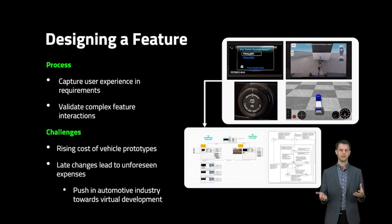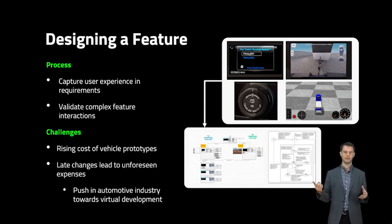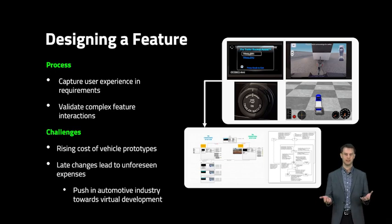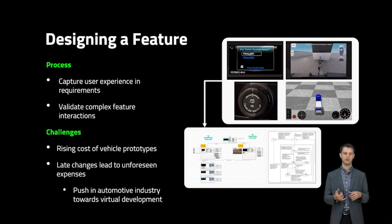An example of this might be for Pro Trailer Backup Assist: the vehicle may be in a state expecting the user to shift to reverse, but there is a conflict in requirements and the HMI requirement is showcasing drive forward. This conflict would create a poor user experience and would need to be corrected. Once software and hardware is created, it can be really costly to fix these things, so it's really important to get the requirements right the first time.